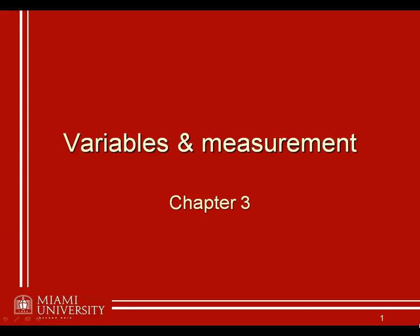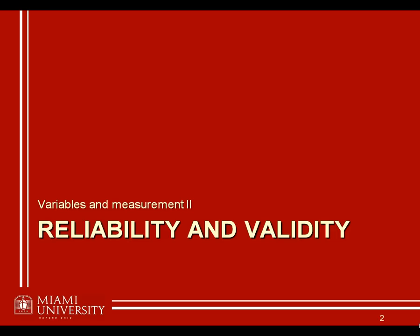This begins your second lecture on variables and measurement, material covered in chapter 3. In this set of lectures we're going to be talking about mostly two specific concepts: reliability and validity. Jackson covers these in chapter 3 as well, but it's important to pay attention because there are a couple of things we're going to talk about here that are not covered in Jackson, as well as a couple of distinctions in the way that the material will be introduced.